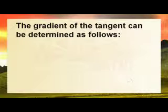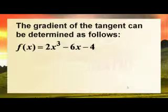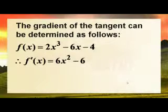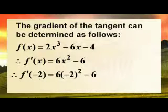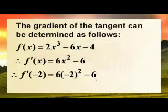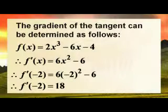Let's do it. So the gradient of the tangent can be determined as follows. Get the derivative. F prime X, bring that 3 down and subtract 1 from the 3 there. 6X squared minus 6 minus 0. And what do we know? The gradient of the tangent at minus 2, substitute it in there. And you've got 6 times negative 2 squared is going to be 6 times 4 is 24 minus 6 is 18. That's the gradient of the tangent. Hold on to that.